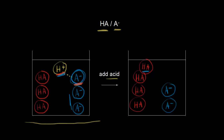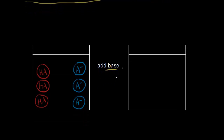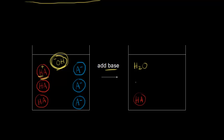What about if you add base? Next let's think about our buffer solution when we add a strong base. We're going to increase the concentration of hydroxide ions in solution. If we increase the concentration of hydroxide ions in solution, you would think that would increase the pH — and it would, except for the fact that we have an acid that can react with our base. So we have some weak acid present here, and the hydroxide ion is going to pick up a proton from HA. So OH minus and H plus give us H2O — we're going to make water. So we're going to lose some of our weak acid; we started with three, and now we have only two left.